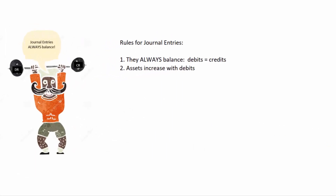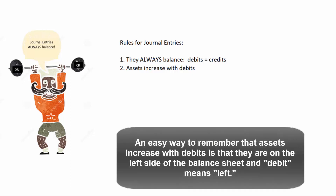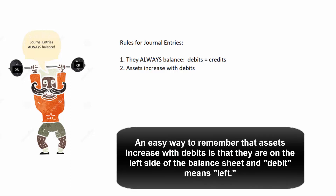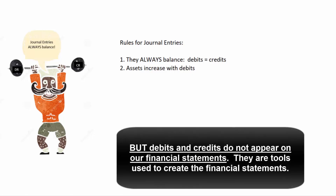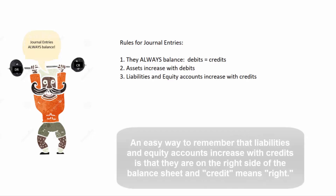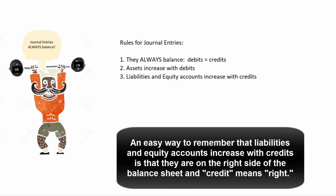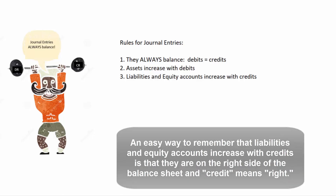Rule two: assets increase with debits. That's easy to remember because assets are on the left-hand side of the balance sheet and debit means left. Debits and credits don't appear per se on our financial statements, but they are a mechanism to remember our rules. Liabilities and equity accounts increase with credits — easy to remember because those accounts are on the right-hand side of the balance sheet and credit means right.